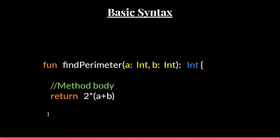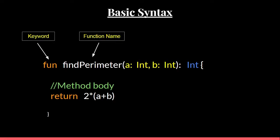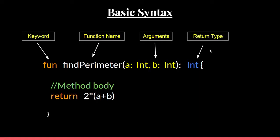This is how we define functions in Kotlin — the basic syntax. There is the 'fun' keyword, which is the keyword we use to define a function. After 'fun' and a space, you define the name of the function. Inside the brackets we have the arguments — if you want to take any arguments you define them here, or leave it empty if not. For example, I'm taking two arguments 'a' and 'b' of type Integer. You can also use another type like String after the colon. After the closing bracket, we have the colon followed by the return type — in this case Integer. Inside the curly brackets we have the body of the function.